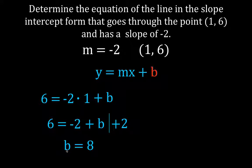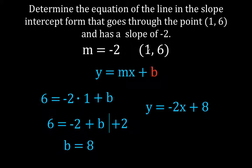Now we have m and b, so we can write the equation. The equation of the line that has a slope of minus 2 and goes through the point (1, 6) is y equals minus 2x plus 8. That's it.